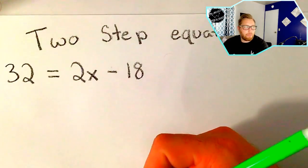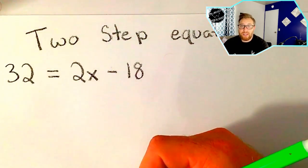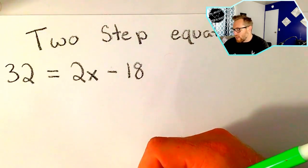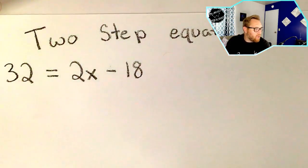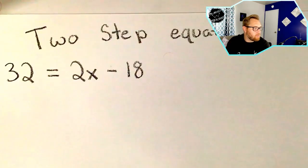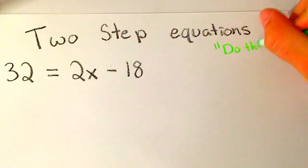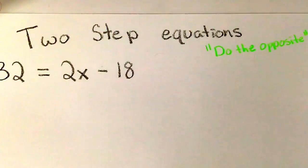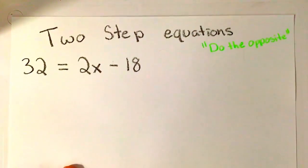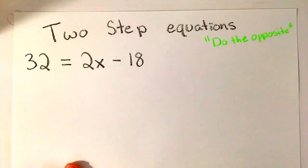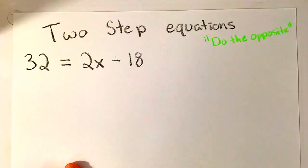I told you we use these things called inverse operations. Inverse operations just means to do the opposite. When we say do the opposite, what we're really saying is everything from the order of operations, we're going to go backwards. We're going to do everything in reverse order, or do the reverse of everything. That is where we get the term inverse operations.